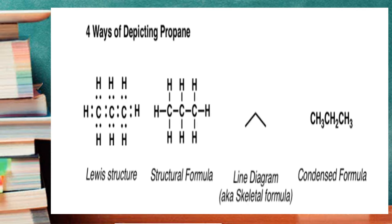Let's recall the four ways of depicting propane. The first example is the Lewis structure using the dot structural formula. Then you have the structural formula, also known as the expanded structural formula. The next one is the line diagram and the last is the condensed structural formula.